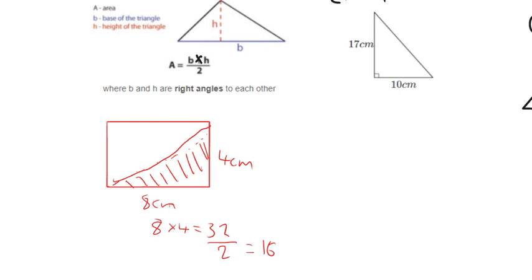So that's kind of where the formula for area of a triangle comes from. That's why we divide by two, because every single triangle is actually half of a rectangle.